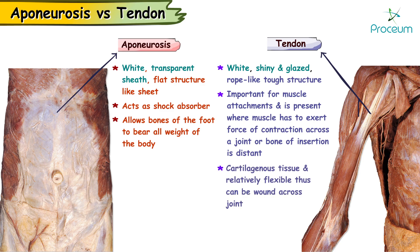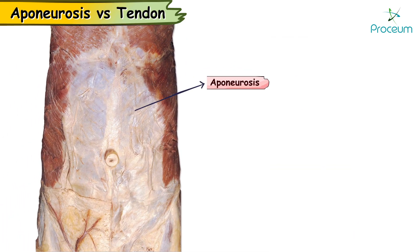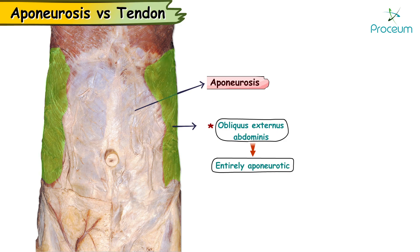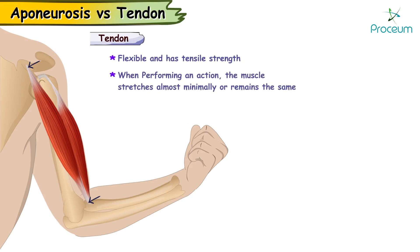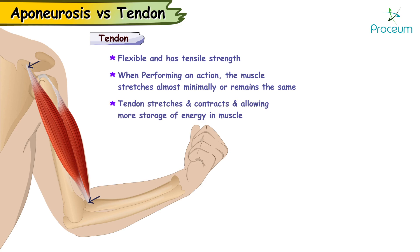The tendon is this cartilaginous tissue which is relatively flexible and thus can be wound across the joint. The epineurosis of the abdomen called the obliquus externus abdominis is one such muscle which is entirely epineurotic in structure. A tendon is so flexible and has such tremendous tensile strength that while performing an action the muscle stretches almost minimally or remains the same, but the tendon stretches and contracts, thus allowing more storage of energy in the muscle.